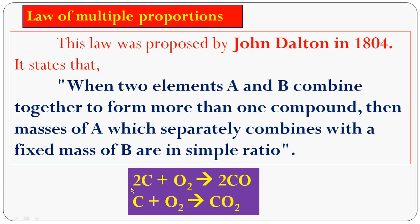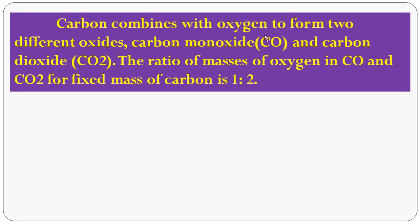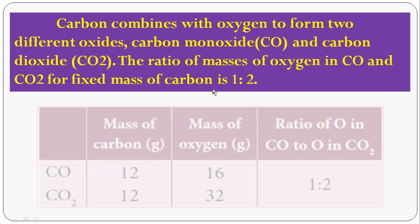Now let us consider one example. Carbon combines with oxygen to form carbon monoxide, CO. The second one, carbon combines with oxygen to form carbon dioxide. Here, carbon combines with oxygen to form two different oxides: carbon monoxide CO and carbon dioxide CO2. The ratio of masses of oxygen in CO and CO2 for the same mass of carbon is 1 is to 2.